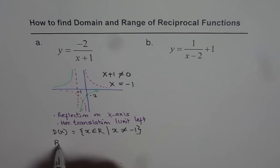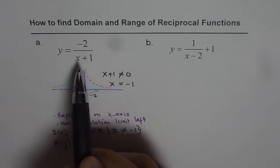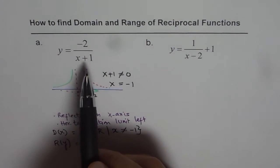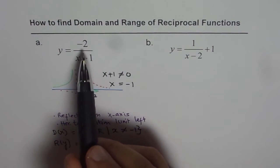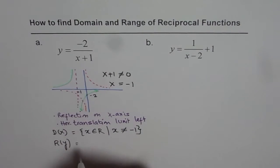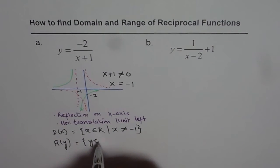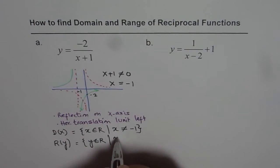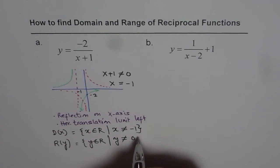Now to find the range, range is affected by the y-values. And if you know this transformation, we know that the y-value here cannot be 0. Since the function is approaching 0, so range is y belongs to real numbers where y is not equal to 0.